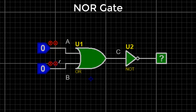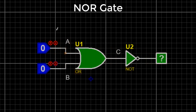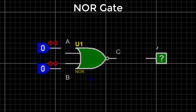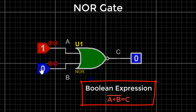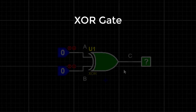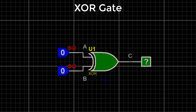NOR gate: If we add a NOT gate at the output of the OR gate, we call it a NOR gate. It works the same as the OR gate but gives an inverted output. The NOR gate gives a low or zero output when any of its inputs is high or one. The boolean expression is A + B = complement of C.